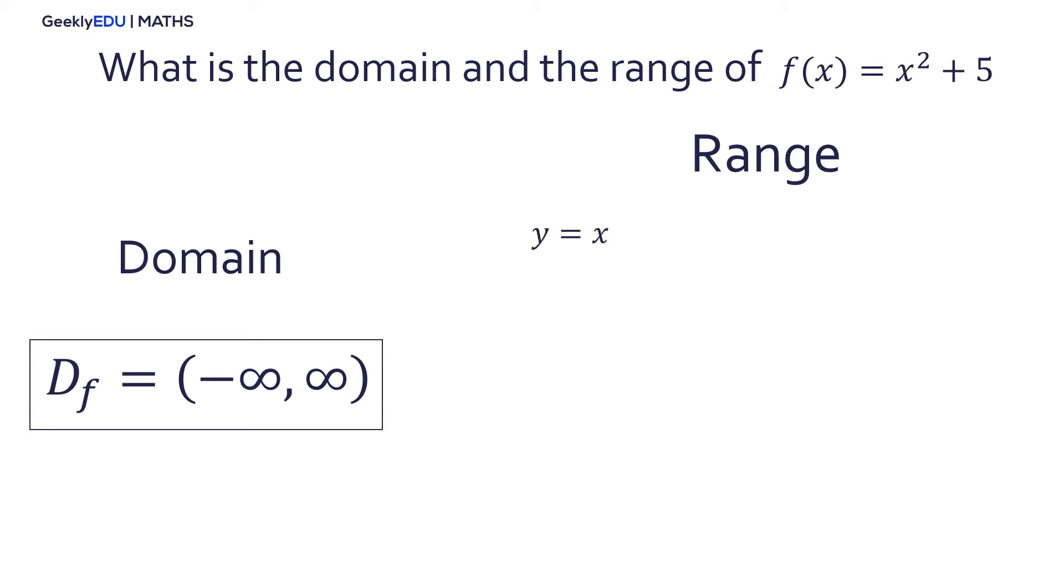The range are all the numbers that come out of function. The first step is to rewrite the function as an equation of x and y. Then we have to clear the x variable. By using the root's properties, we know that the number inside a root should be equal or bigger than 0. Finally, clearing y will get that the range are all numbers bigger than 5.